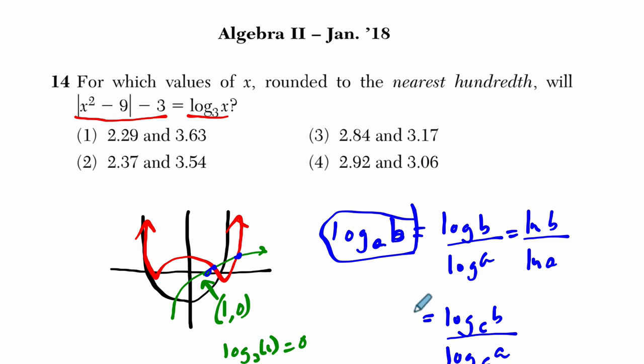But you can do the log of any base C of B over log of any base of A, and these will be equivalent to our original statement here. And the way I remember it is that I take the log of this part, which is higher, it's the numerator here, over the log of this base, which is literally lower, so it's the denominator here.